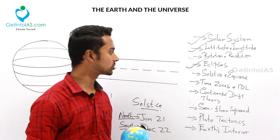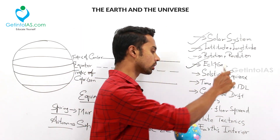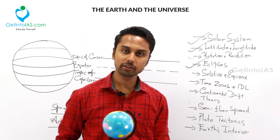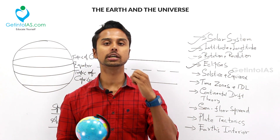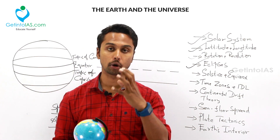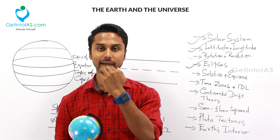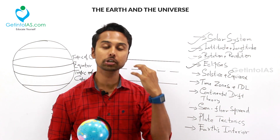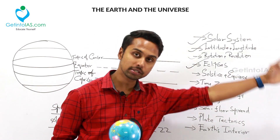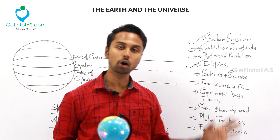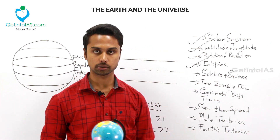Now we will go to the next topic which is solstice and equinox. Earlier we have seen that due to the revolution of the earth, seasons are formed. Due to the revolution in an elliptical orbit, it gives rise to solstice and equinox, which in turn gives rise to seasons. Now we will see in detail what is solstice and equinox.